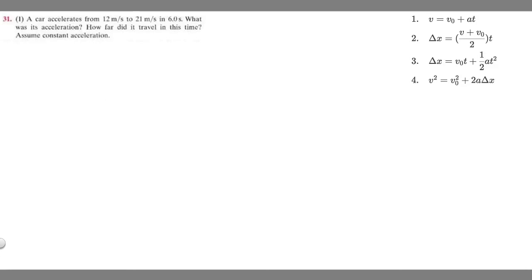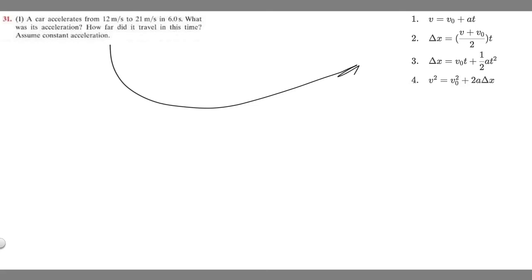In this problem, a car accelerates from 12 meters per second to 21 meters per second in six seconds. We're asked: what was its acceleration, and how far did it travel in this time? We're assuming constant acceleration, which is the key word telling us to use kinematic equations.